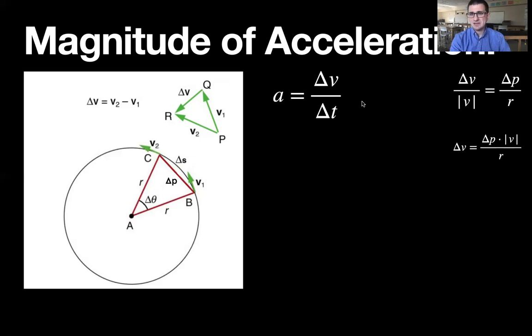And then I'm going to take this and substitute it back into the acceleration formula. So delta P divided by the delta T stays there times V over R. And we know that change of position over change in time is just the velocity. So I get acceleration equals V times V over R. And this actually turns out that the formula for the magnitude of the acceleration for an object that is moving in a circle with a constant speed is V squared over R.